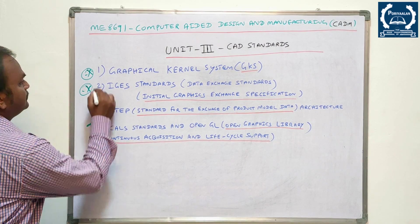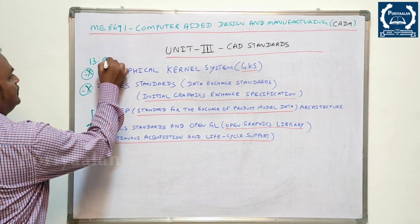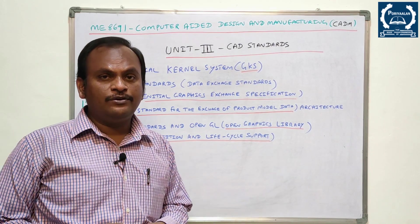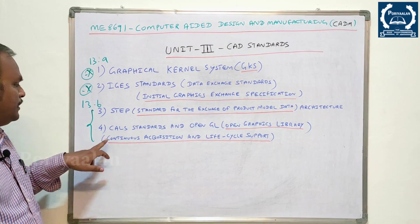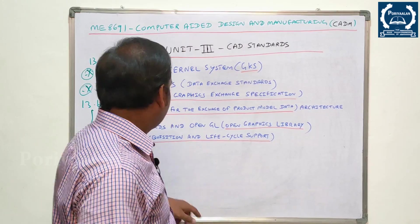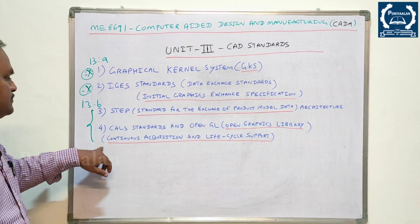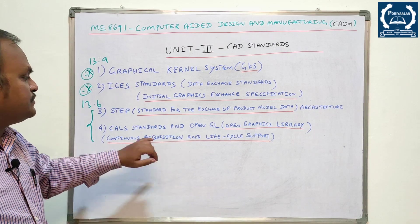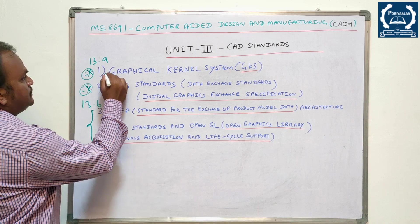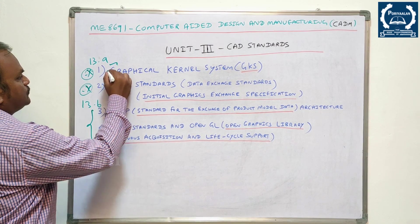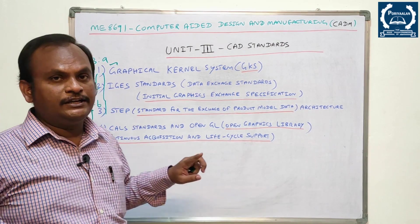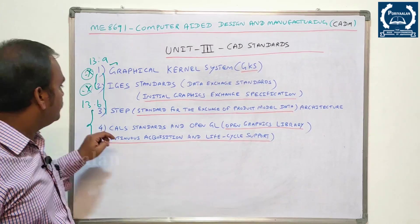STEP architecture is also important. CALS — Continuous Acquisition and Life Cycle Support — and OpenGL complete the four standards. Questions 1 and 2 (GKS and IGES) map to 13A, while questions 3 and 4 (STEP and CALS) map to 13B. The most important ones are GKS and IGES, or alternatively GKS and STEP.